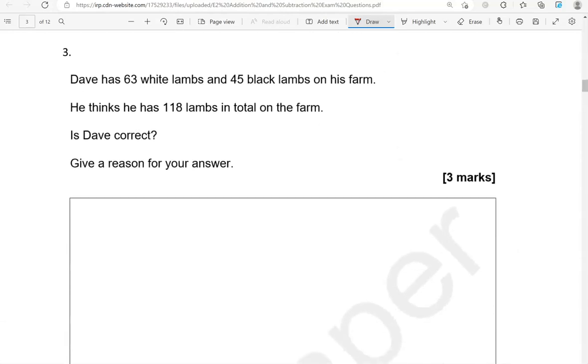Dave has 63 white lamps and 45 black lamps on his farm. He thinks he has 118 lamps in total on the farm. Is Dave correct? Give a reason for your answer. So 63 and 45. Does that add up? Do they both add up to 118? That's the question.